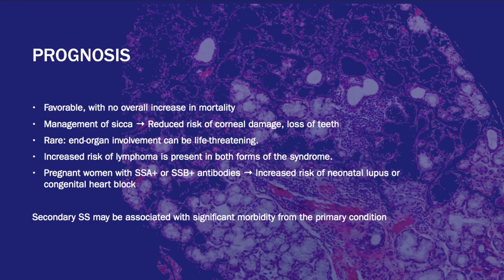The prognosis of Sjögren's Syndrome is favorable with no overall increase in mortality. Rarely, patients can have end-organ involvement which can be life-threatening. It's essential to manage sicca symptoms to reduce the risk of corneal damage, visual loss, and loss of teeth. Patients are at increased risk for non-Hodgkin's lymphoma, especially primary Sjögren's. Pregnant women with positive SSA or SSB antibody have increased risk for neonatal lupus or fetal congenital heart block — this can be seen on board exams.